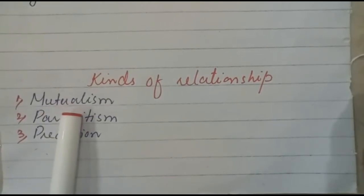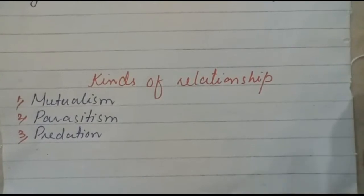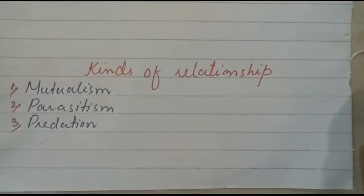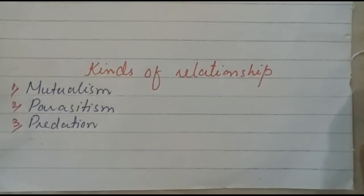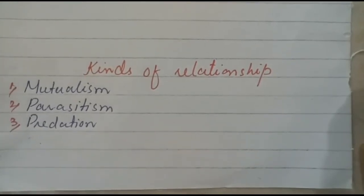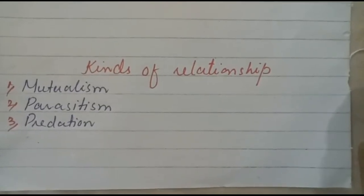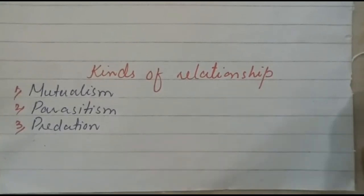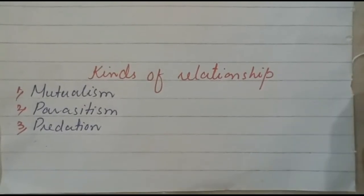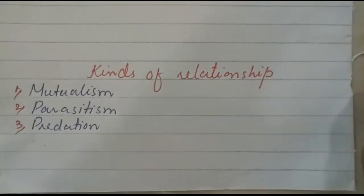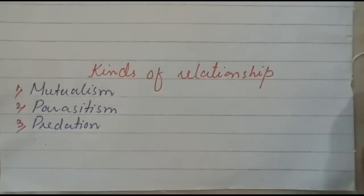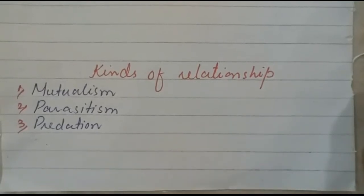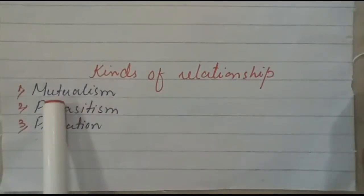In mutualism, both organisms benefit from each other. The best example of mutualism is lichen, which is a combination of alga and fungus. The alga makes its own food through photosynthesis, while the fungus provides minerals absorbed from its surroundings and protects the alga from direct sunlight and high temperatures. Both the alga and fungus benefit — this is mutualism.